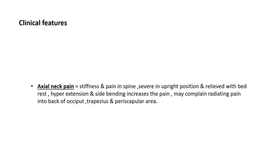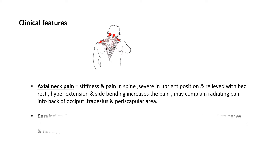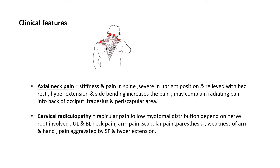Sometimes the patient may complain of radiating pain towards the occiput, trapezius area, and periscapular area. There is an image showing the pain presentation on the posterior part of the neck and the interscapular area of the body. The second condition is cervical radiculopathy, where radicular pain follows a dermatomal distribution, basically depending on the nerve root involved.